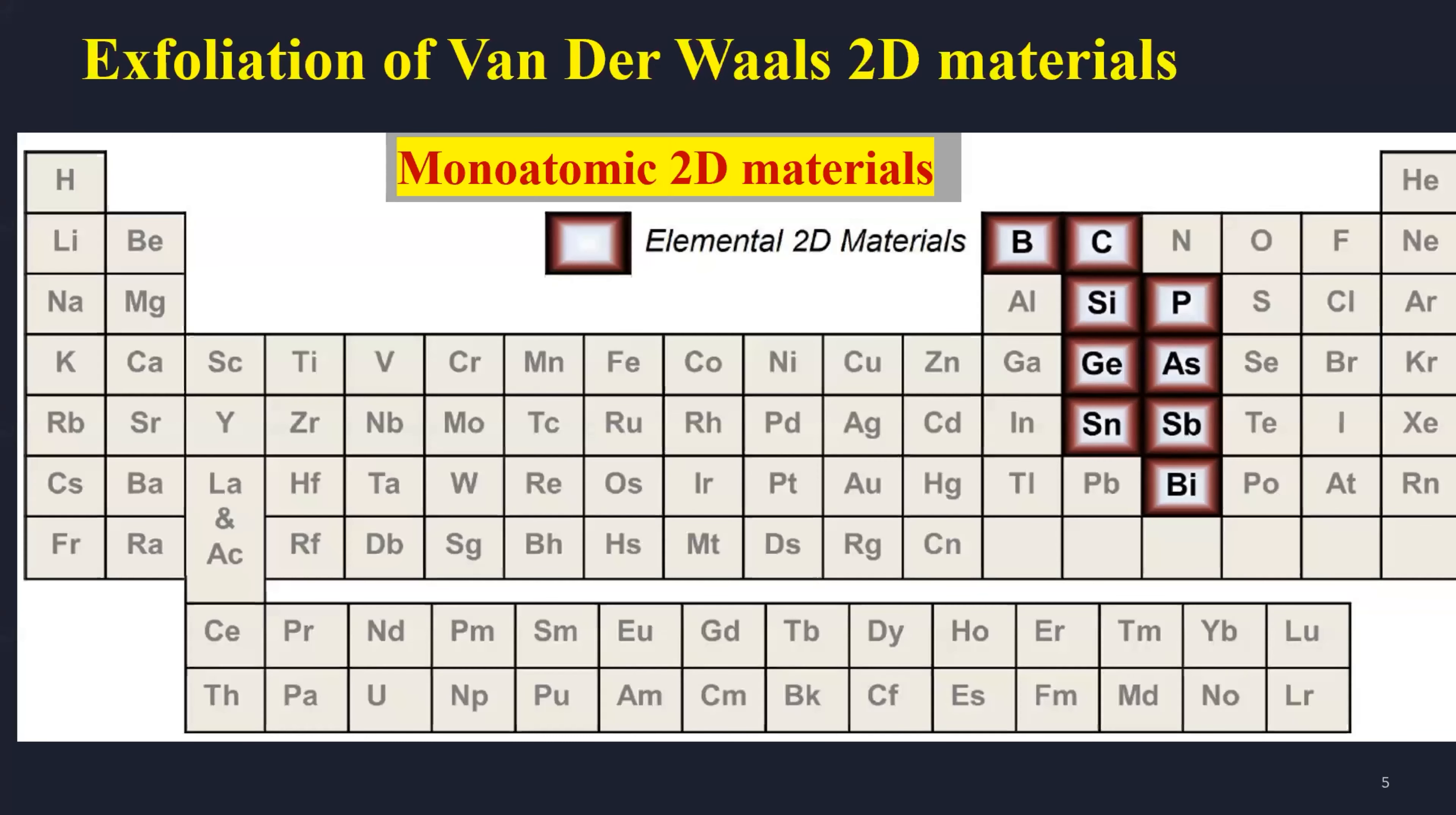This success of graphene encouraged the exfoliation of new Van der Waals materials. So large 2D materials and their allotropes were discovered, such as silicene, germanene, and others from the 4th, 3rd, 5th, and 6th column of periodic table.